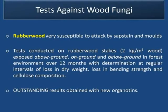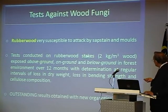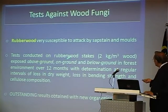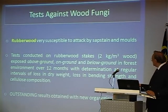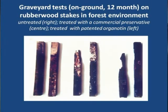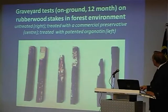We tested against wood fungi. Rubberwood is used extensively in furniture but is very susceptible to attack by sap stain and molds. We did some tests of rubberwood in the forest environment, putting stakes — rubberwood stakes on ground, above ground, below ground — to see whether they were affected by fungi, insects, and termites. Outstanding results were obtained. The untreated wood is shown on the right, treated with the commercial preservative in the center, and the patented organotin on the left. The organotin-treated wood is very clearly free of any fungal or insect attack. Excellent.